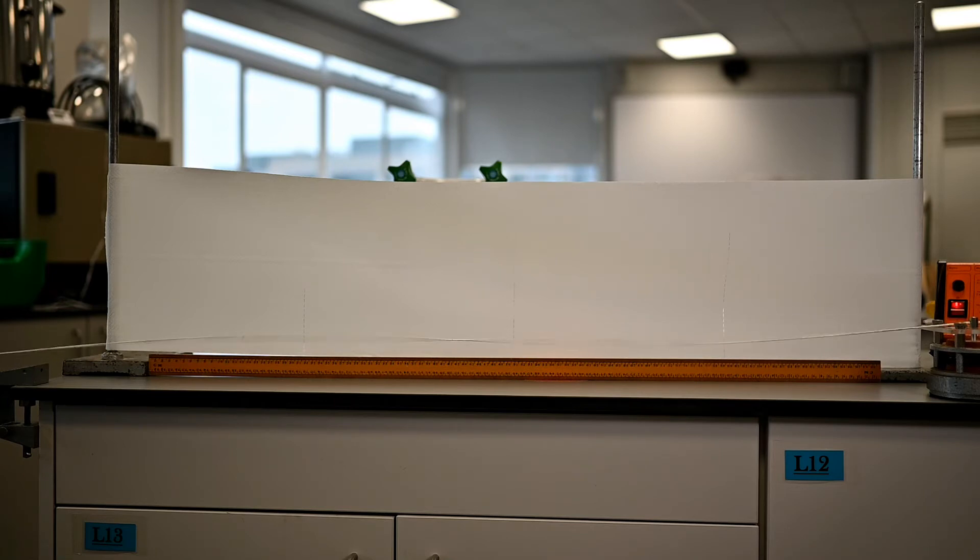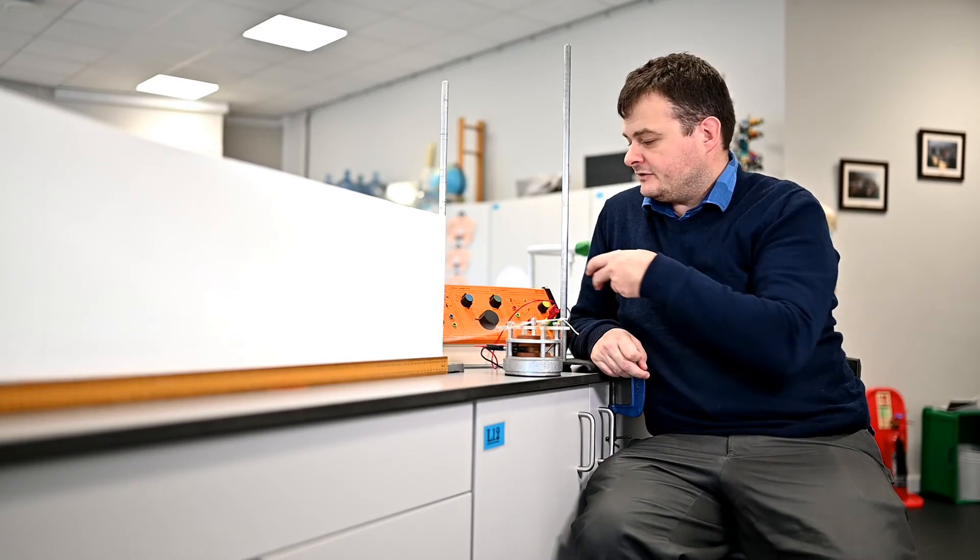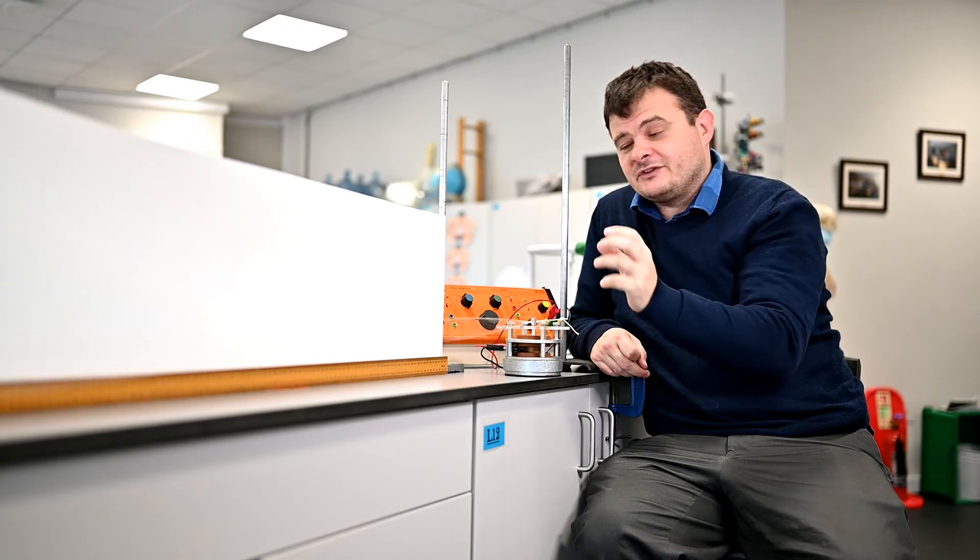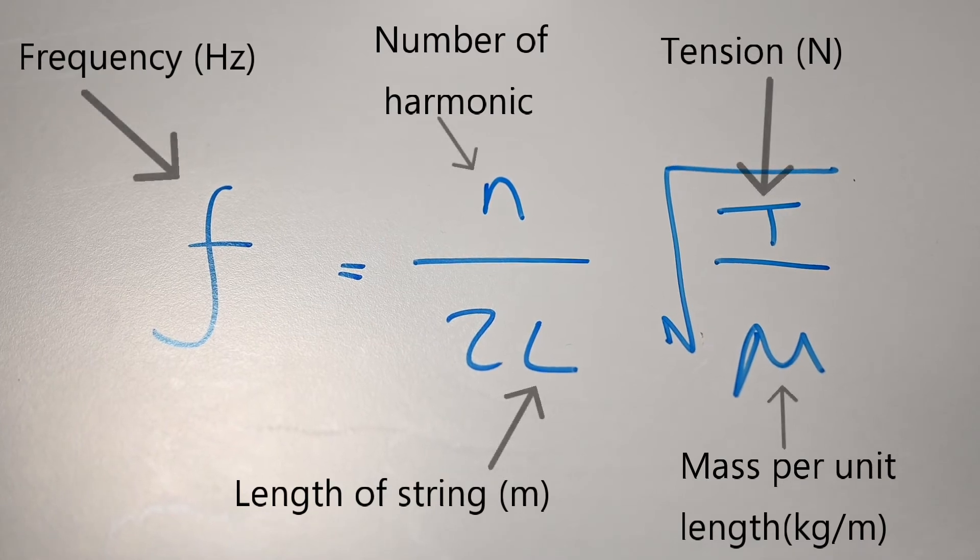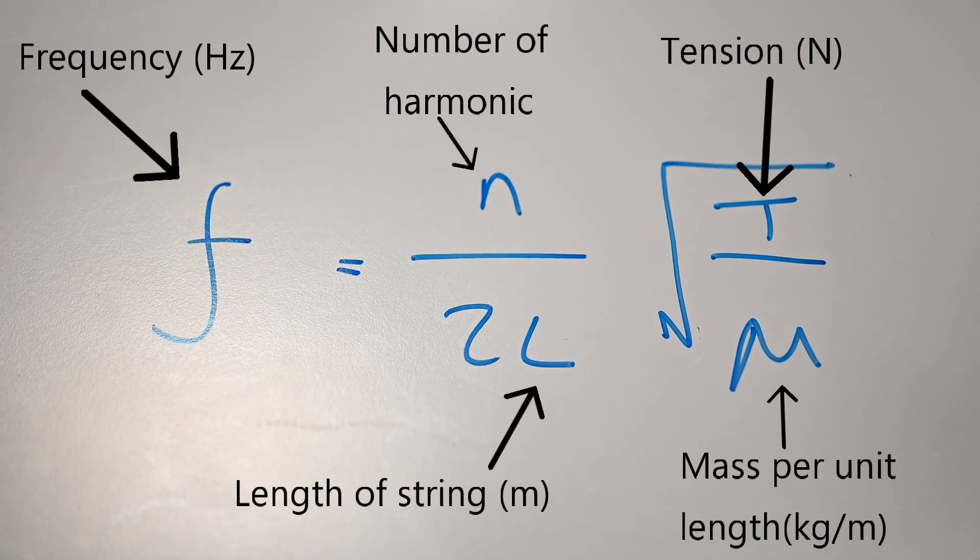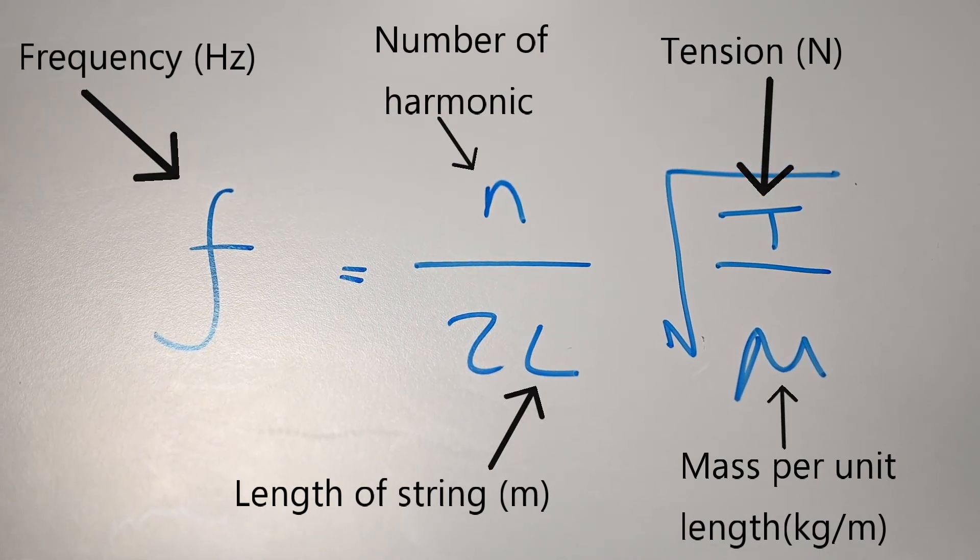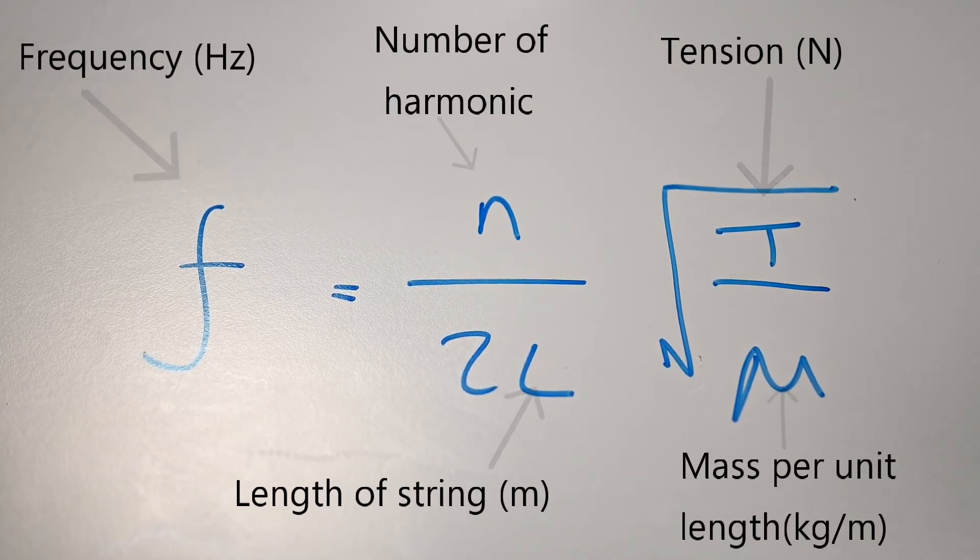And then you can adjust the frequency and find others as well. Now the factors that affect these frequencies are the tension in the string, the length of the string, and the mass per unit length of the string.